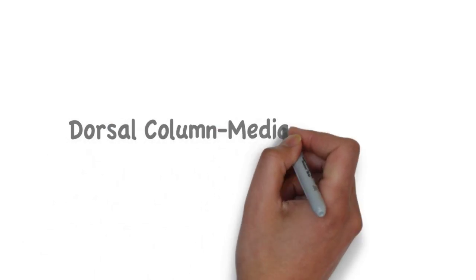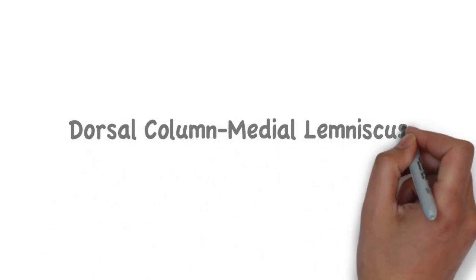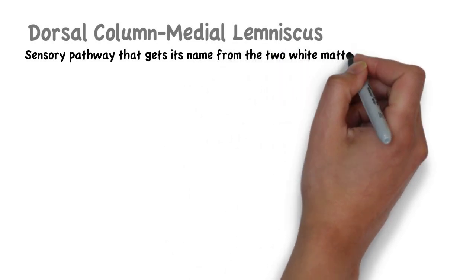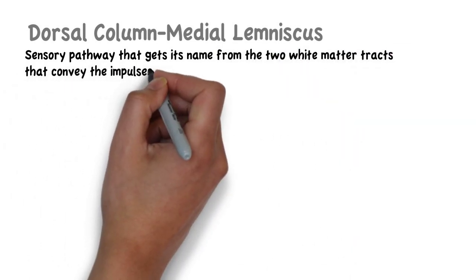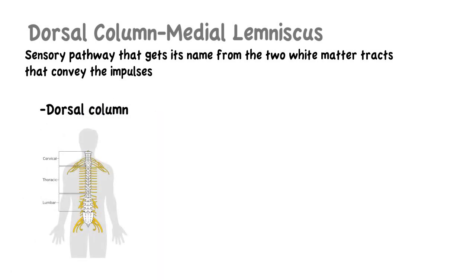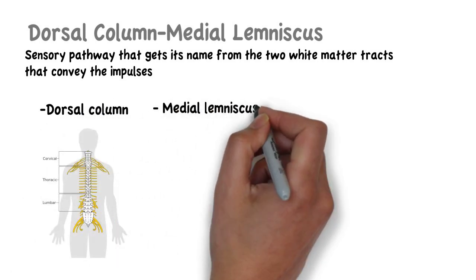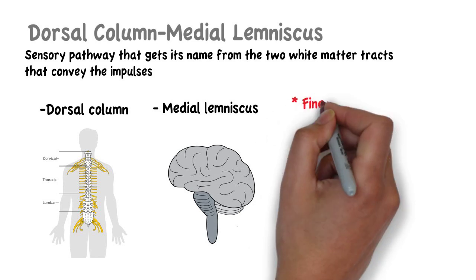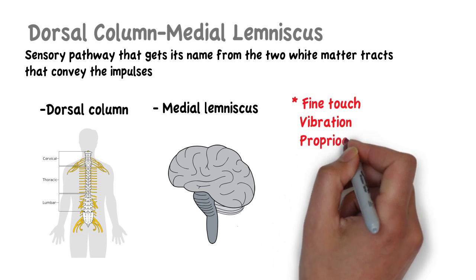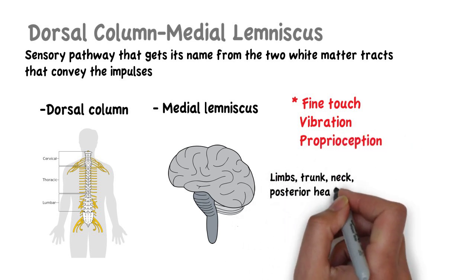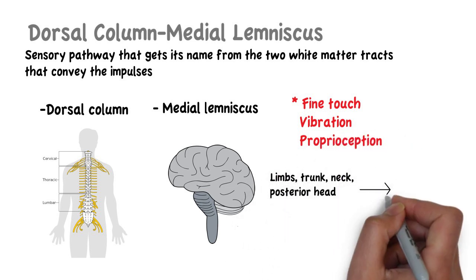The dorsal column medial lemniscus pathway is a sensory pathway that gets its name from the two white matter tracts that convey the impulses — these being the dorsal column of the spinal cord and the medial lemniscus of the brainstem. This tract transmits nerve impulses for fine touch, vibration and proprioception from the limbs, trunk, neck and posterior head to the cerebral cortex.